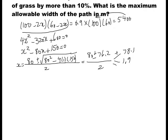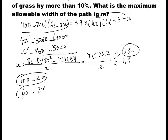We have two answers: 78.1 or 1.9. However, if we use 78.1, the new dimensions would be 100 minus 2 times 78.1 and 60 minus 2 times 78.1, which would both be negative — and that is impossible. So 78.1 is unacceptable. Using x equals 1.9, both 100 minus 2 times 1.9 and 60 minus 2 times 1.9 are positive, so the maximum allowable width is 1.9 meters.